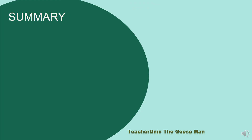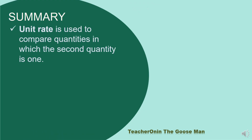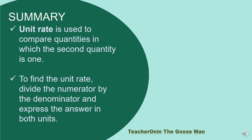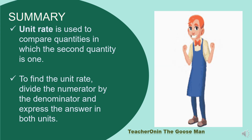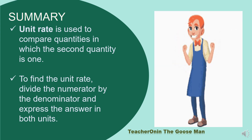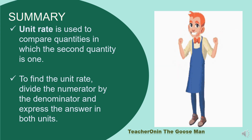Now, to summarize our discussion for unit rate: unit rate is used to compare quantities in which the second quantity is 1. And to find the unit rate, divide the numerator by the denominator and express the answer in both units.